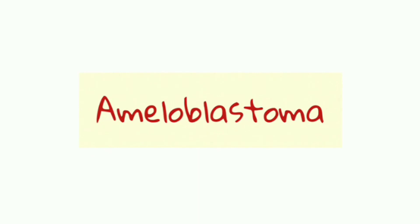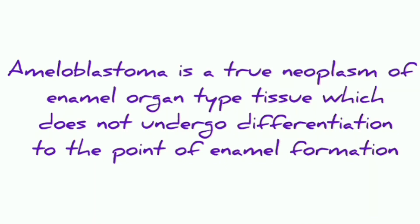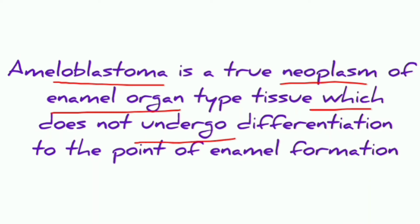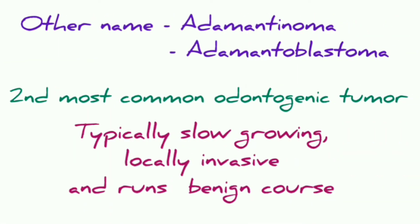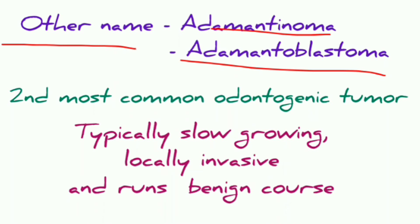Today we are going to learn about ameloblastoma, a very important topic. Ameloblastoma is a true neoplasm of the enamel organ type tissue which does not undergo differentiation to a point of enamel formation. It can also be called adamantinoma or adamantoblastoma, and it is the second most common odontogenic tumor.